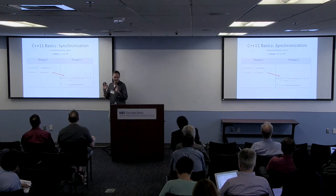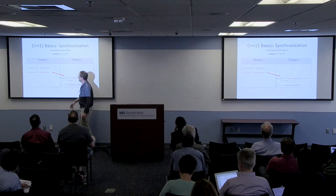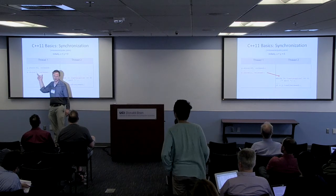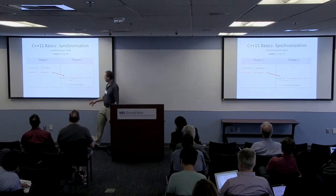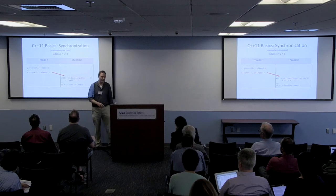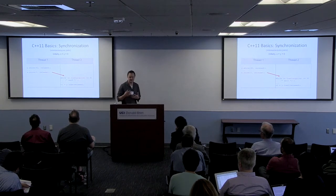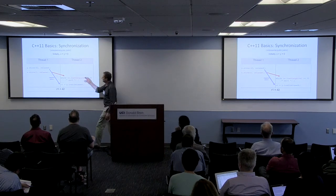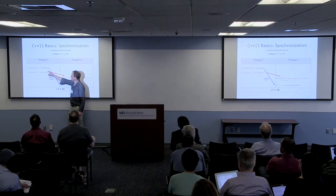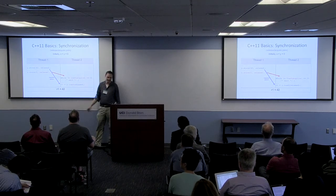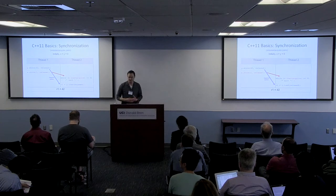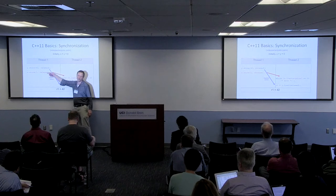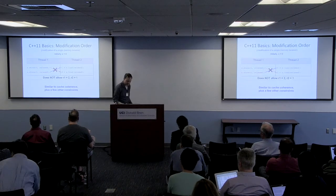To illustrate stronger memory orders, consider an example where the store to X has a parameter called 'release' and the corresponding load from X has a parameter called 'acquire'. This establishes a synchronization similar to what locks do, creating a happens-before relation that says anything that occurred before the store must happen before anything that occurs after the load. This guarantees the load will see the value from the store.